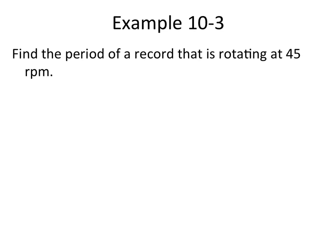Alright, so an example. Example 10.3. We want to find the period of a record that is rotating at 45 RPM. Alright, 45 revolutions per minute. So let's just go ahead and write down 45 RPM. So we're starting with that. And this is really just sort of a unit vector problem. RPM, of course, means revolutions per minute.